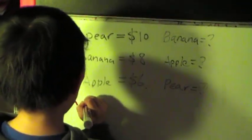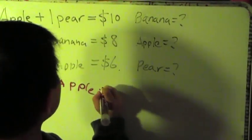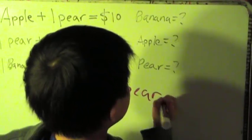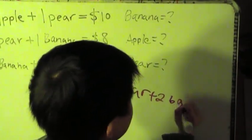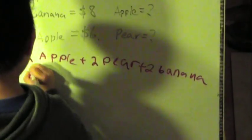Two apples plus two... plus two pear... plus two banana. Equal.